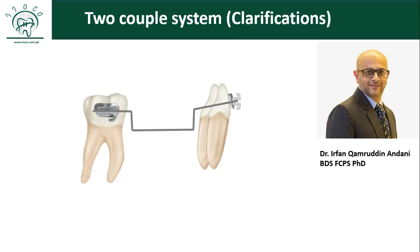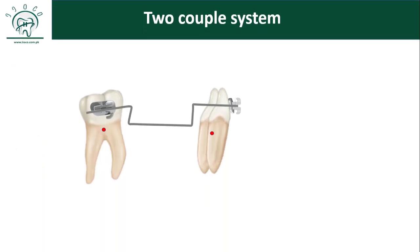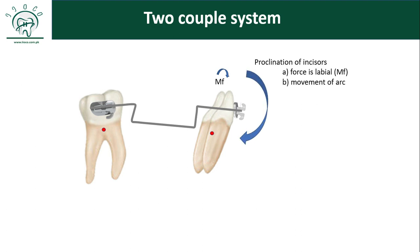In our previous video we talked about the utility arch. When you activate the utility arch and insert it into the brackets, there is a tendency towards proclination because of the following factors: the force is labial to the center of resistance, and the movement of the arch is clockwise — that is, downward and backward.